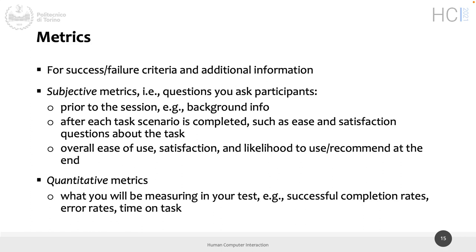After the consent form, as a recap, you have to decide who your target population is for the testing and how many participants you need. You must prepare materials including the consent form, and most importantly a series of tasks with their success and non-success criteria, along with other data you want to collect and analyze in the planning phase. Metrics are used mainly for understanding if a task was successful or not, and for gathering any additional information.